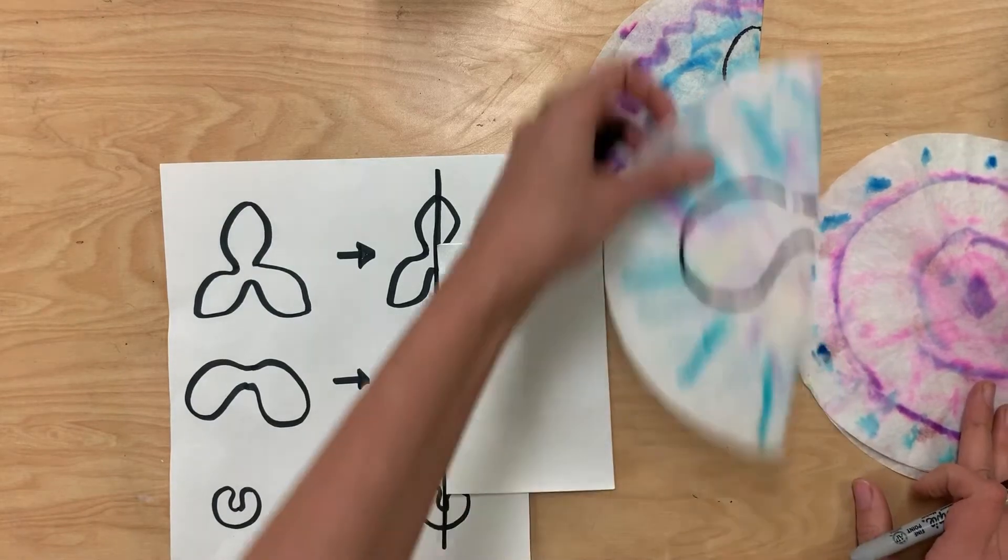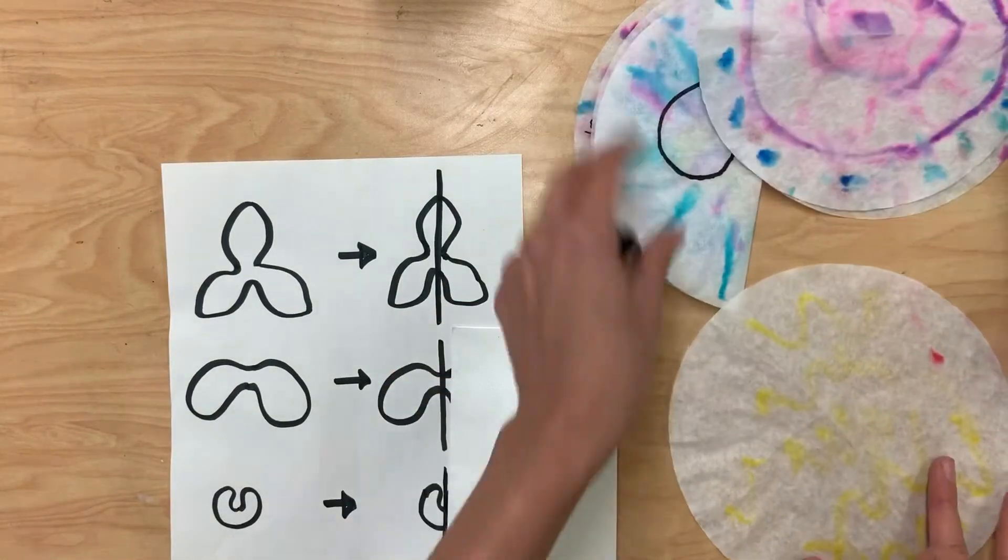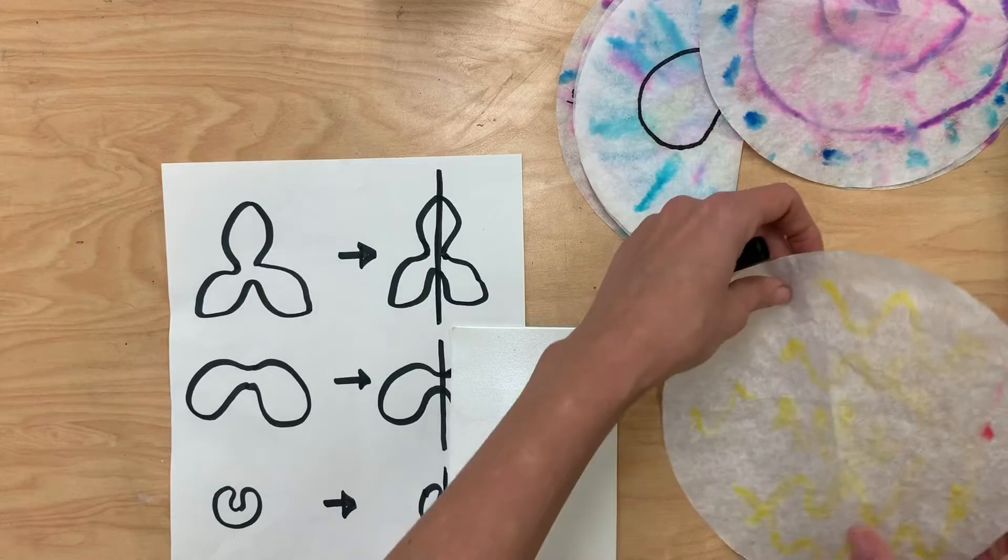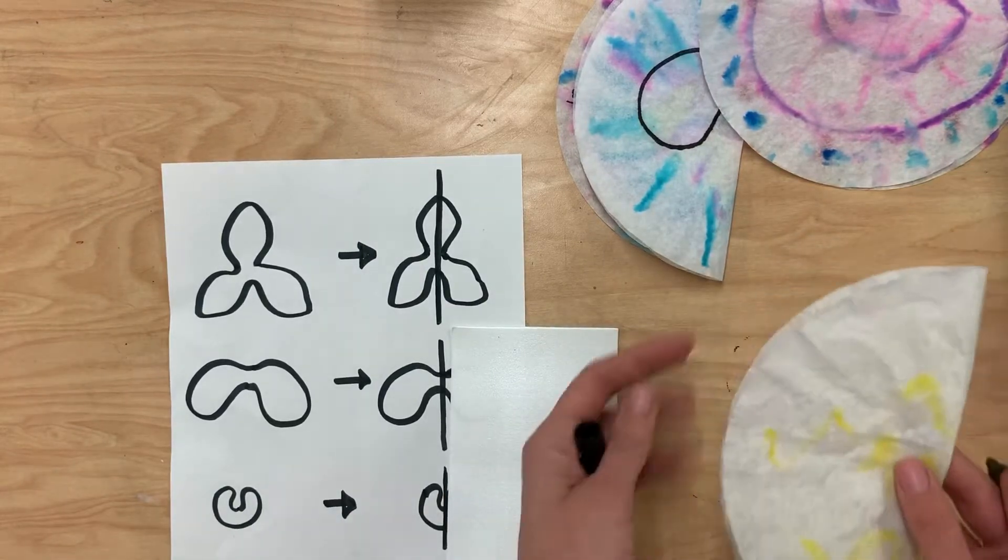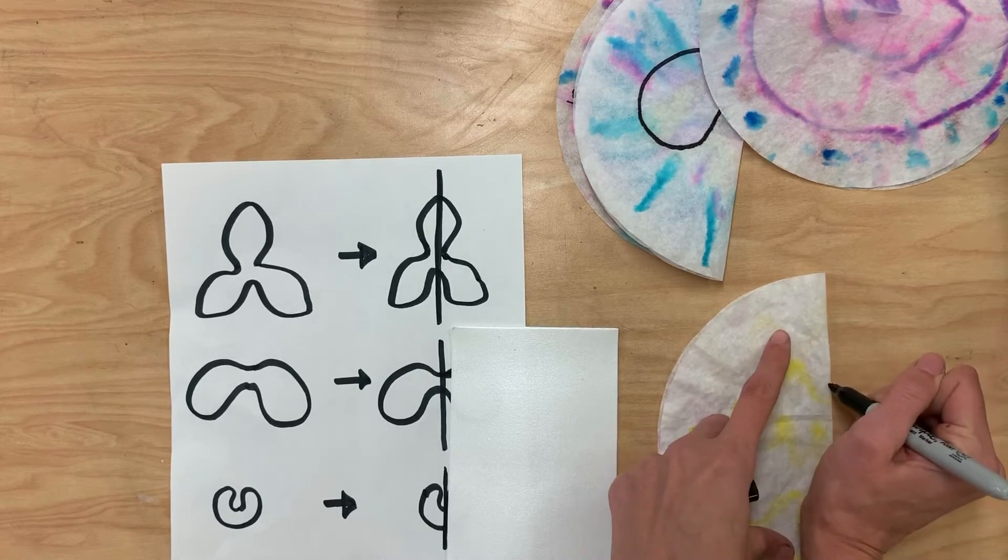And then for my last one, this small one for the middle, we only had you make one of these yellow coffee filters because we're going to be using this twice. So I'm going to fold it in half again, and I'm just going to create this almost U shape.